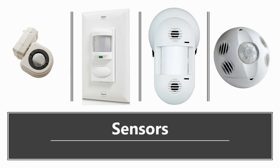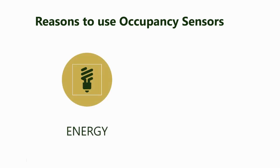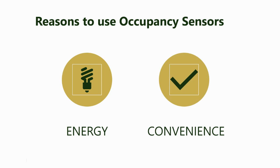By using sensors we can minimize electricity usage by turning on equipment only when it is needed. There are two good reasons to use occupancy sensors. The first is energy savings — using occupancy sensors can save approximately 25% of the electricity used just for lighting. The second reason is convenience. It's easy to forget to turn off the lights, and schedules can vary so time clocks may not always be accurate, which also makes sensors a great option for HVAC applications.